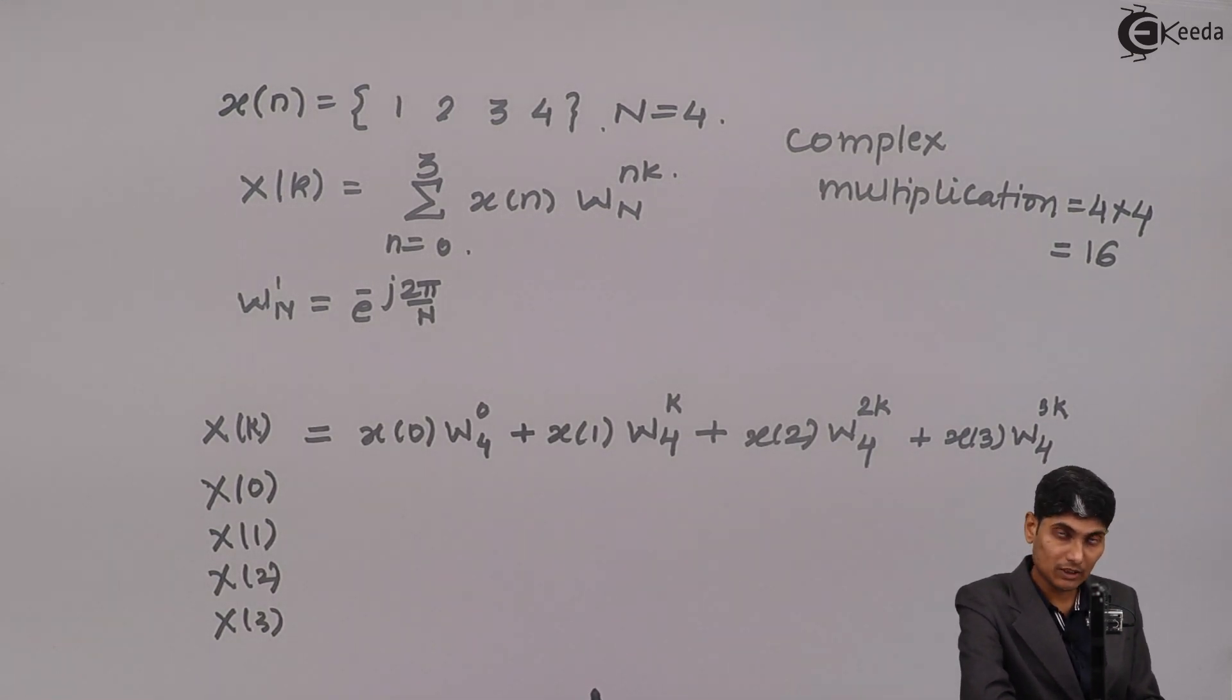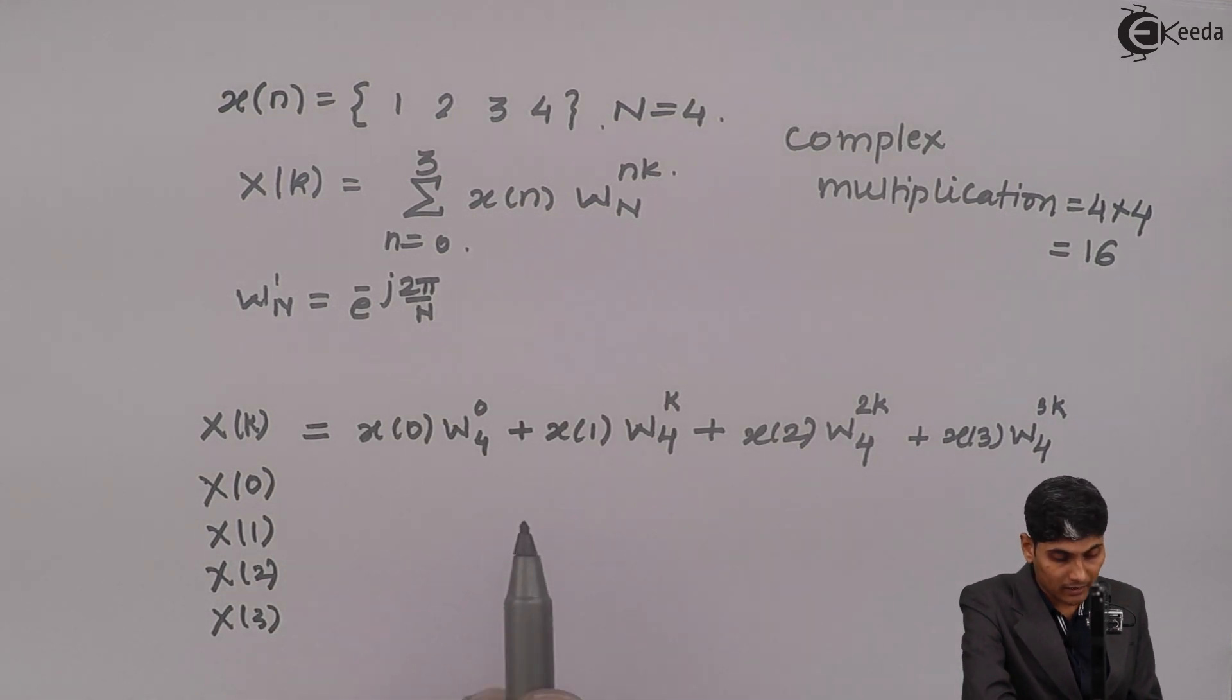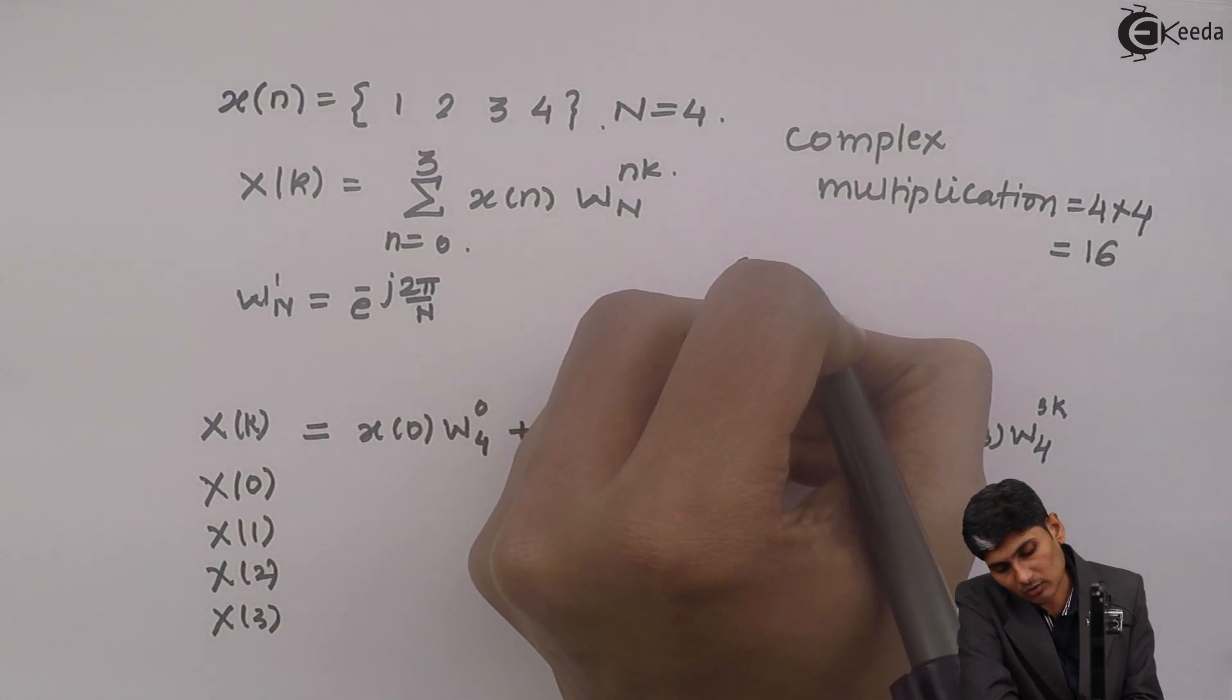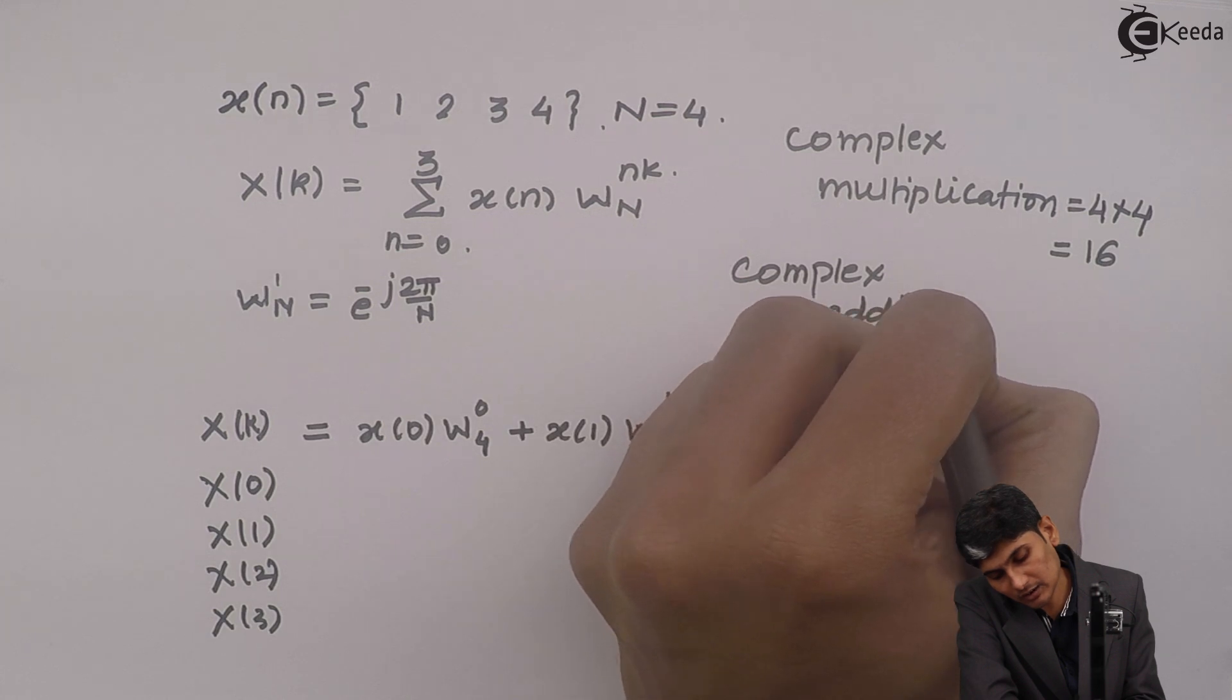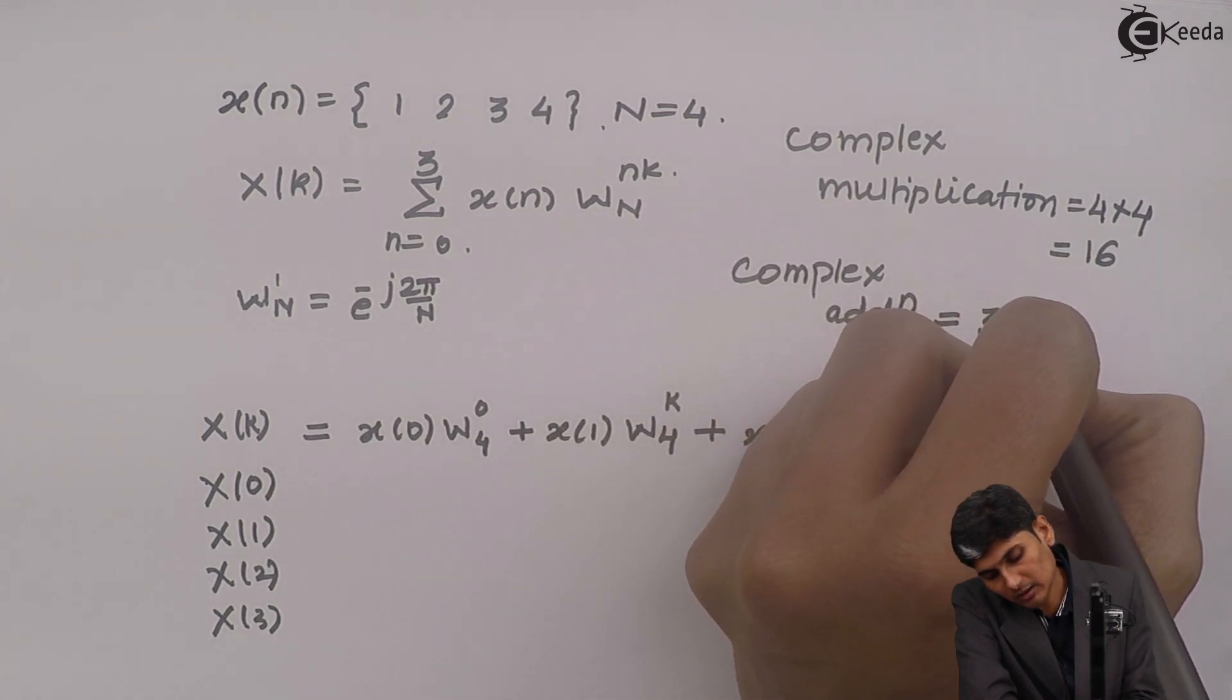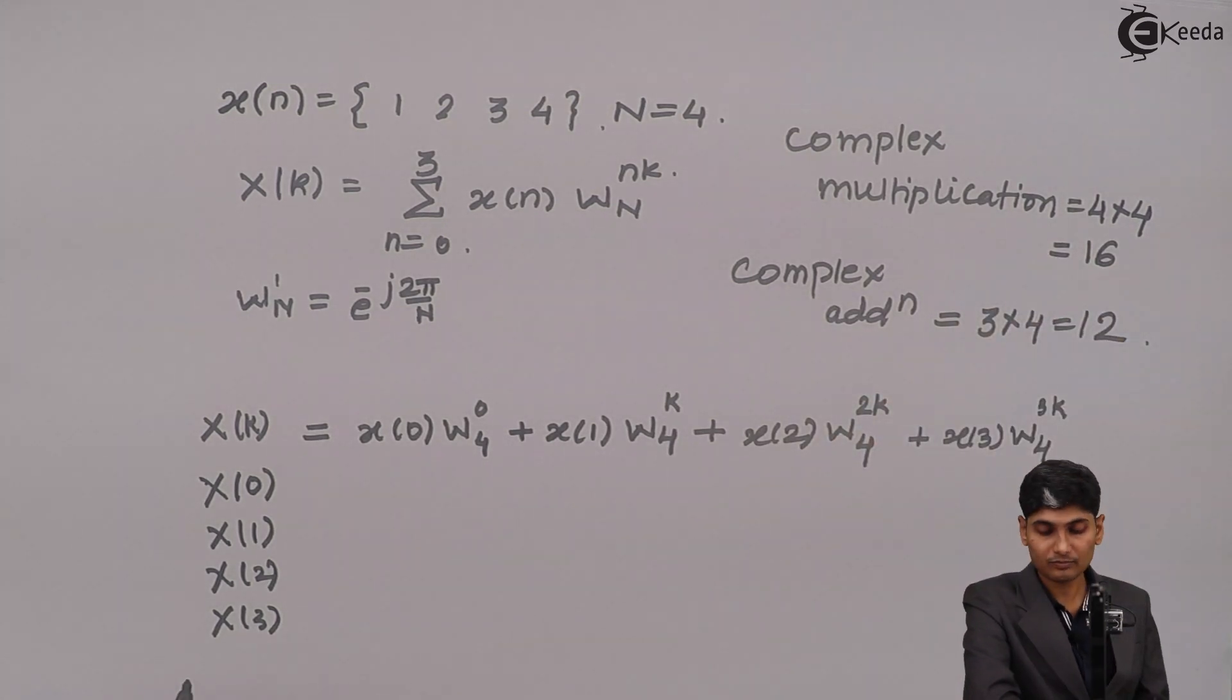If you say about addition of the numbers, then I have 3 additions over here and 3 additions are going to repeat for 4 number of times. So I have complex addition which is nothing but 3 into 4, which is 12.